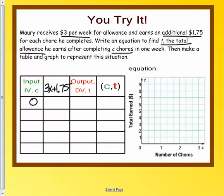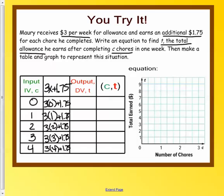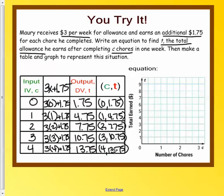So now plug in your variables, or excuse me, your inputs. So on this one, we plug in zero for x, one, two, three, and four for x, and we would get $1.75, $4.75, $7.75, $10.75, and $13.75. So zero equals $1.75 would be my coordinate pair and so on and so forth.